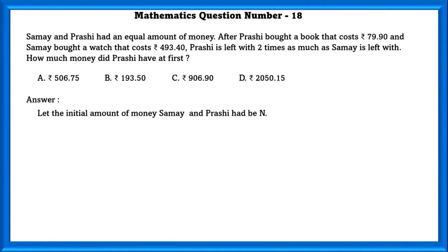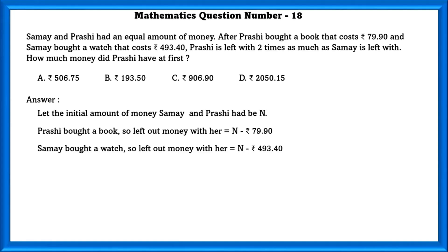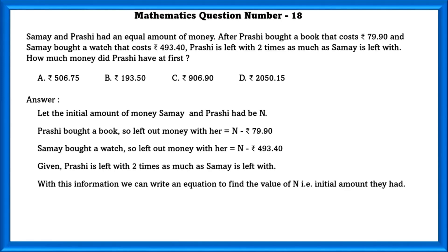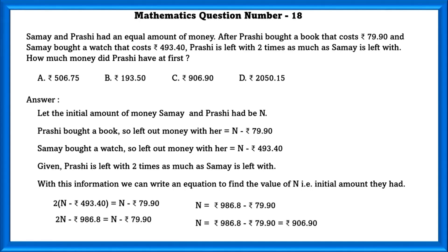Let us take the initial amount of Swamya and Prashy to be N. Prashy bought a book, so the money left with her is N − 79.9. Swamya bought a watch, so the money left with her is N − 493.4. Given Prashy is left with 2 times as much as Swamya, we can write an equation to find N. The value of N is equal to 906.9 — that is the initial amount they had at first.